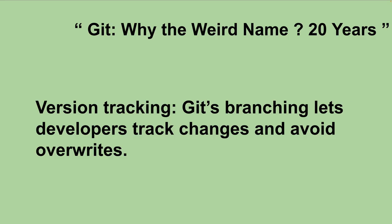For example, multiple software teams are available. There is a product and features. One developer creates a branch and creates code. Then we will talk about Git branches.